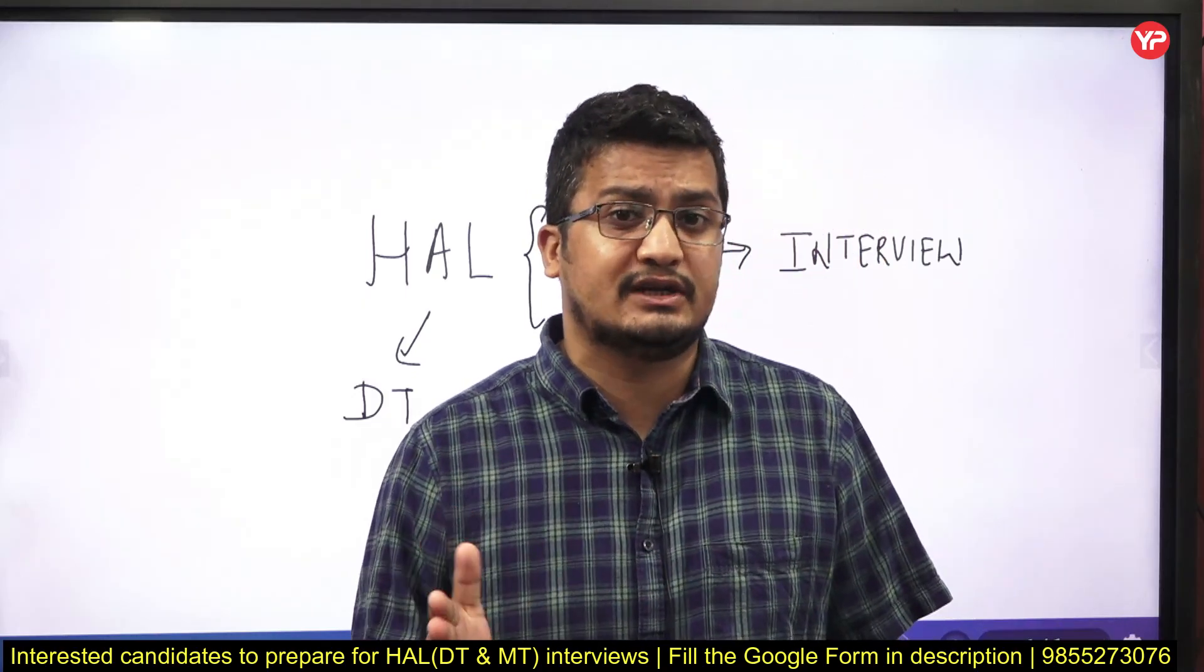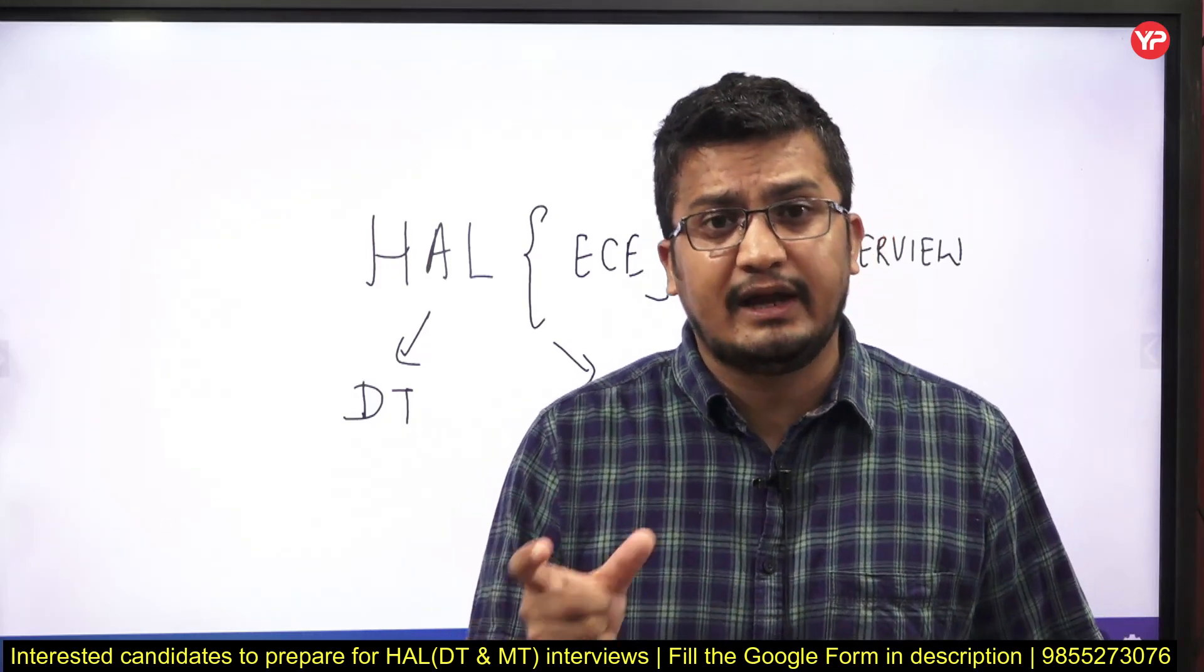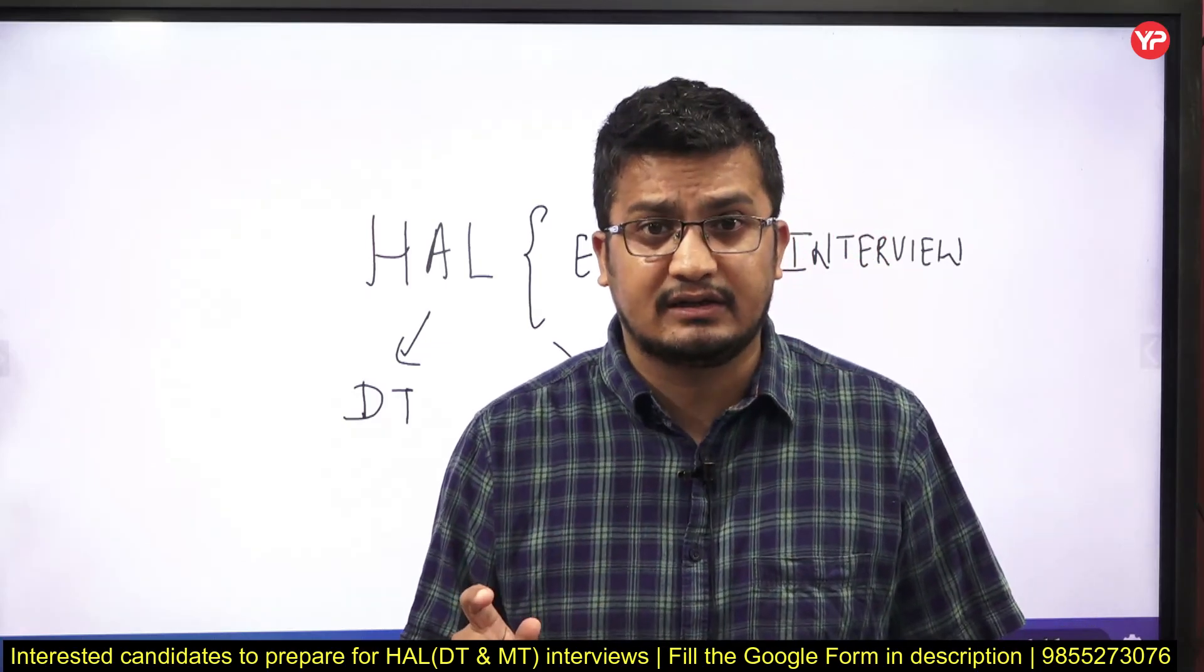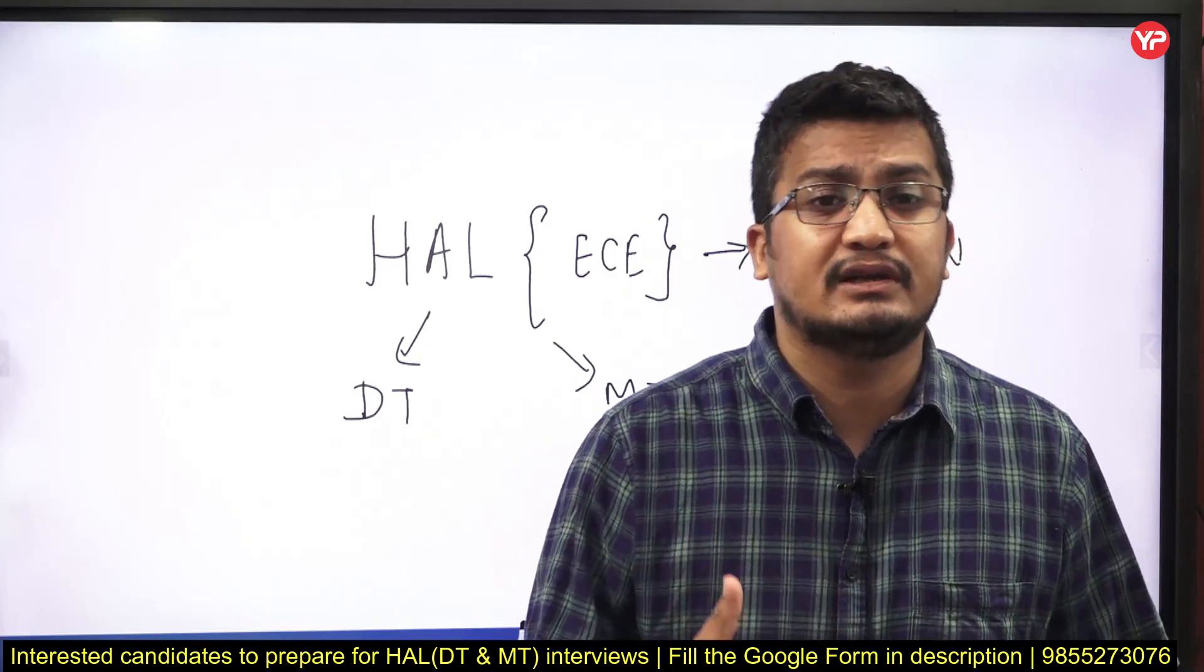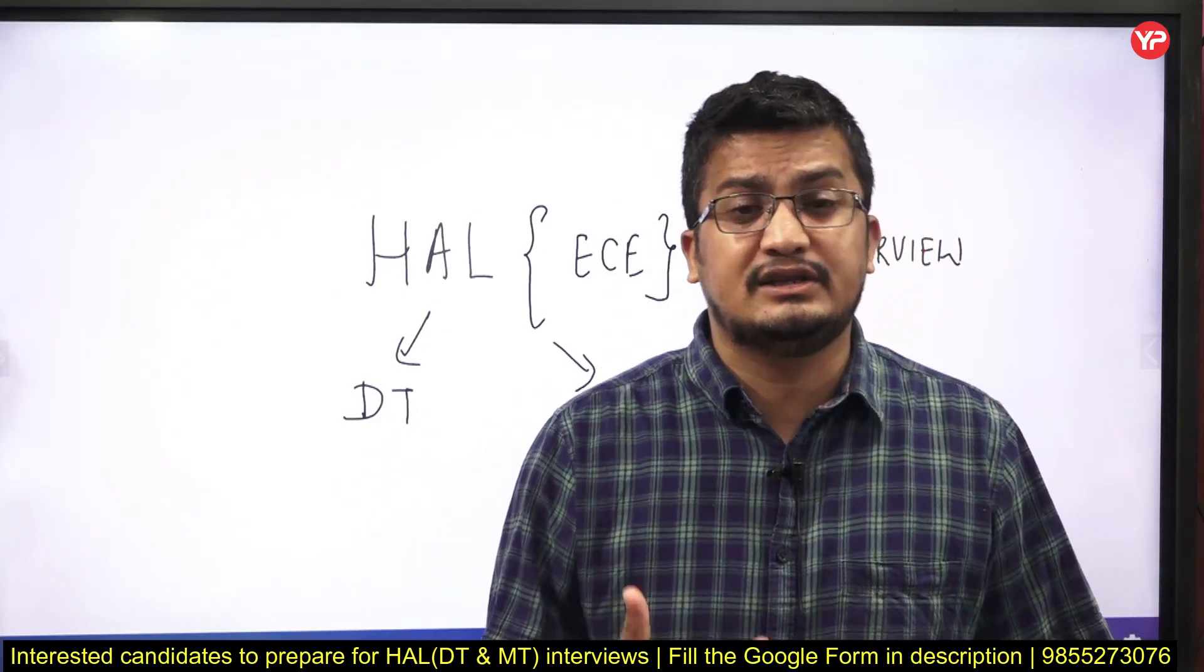What is the difference between transmission line and lumped parameters? Why are transmission lines distributed? Why are lumped parameters something different? What is the transient time effect in transmission lines? Why does it occur? There may be very conceptual questions related to antennas.